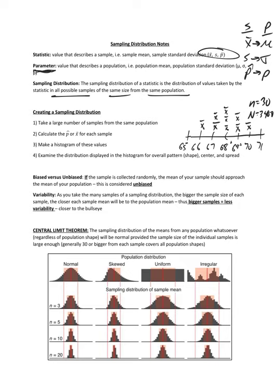When we graph these X-bars, we're not graphing individual heights but a bunch of sample means. The shape that builds is symmetric and normal. That happens in the long run whether we're using X-bars or P-hats. It doesn't really matter what the original distribution looked like — even if heights in our building were skewed slightly left because younger students aren't fully grown, the sampling distribution of means will approach normal.